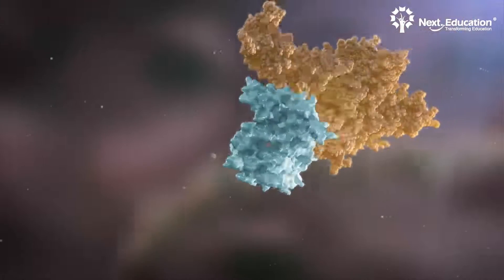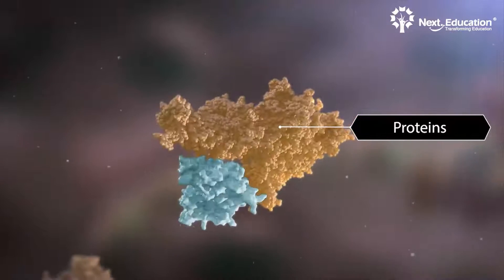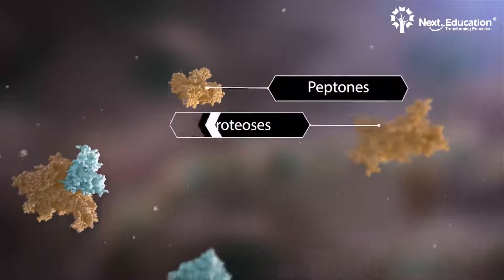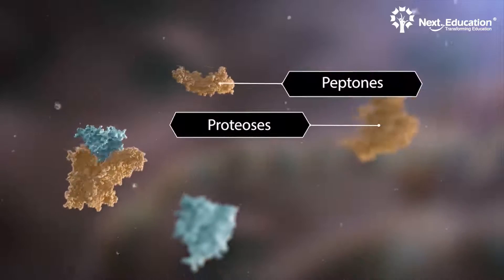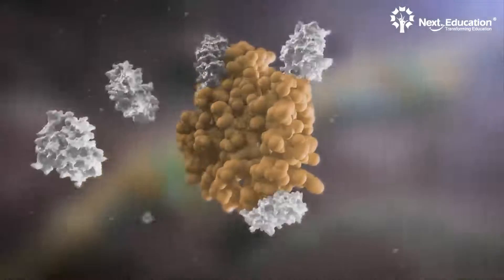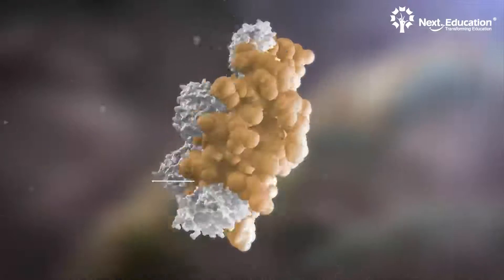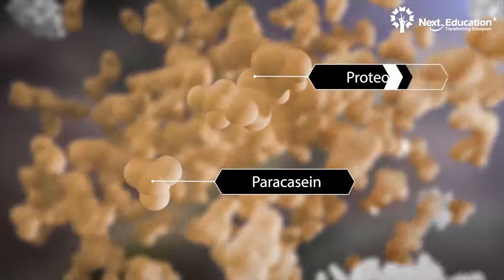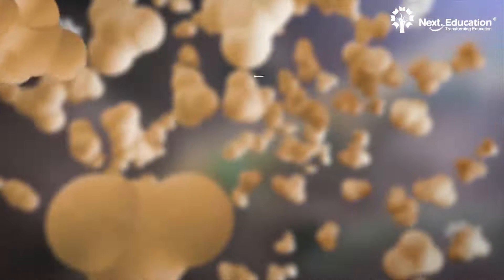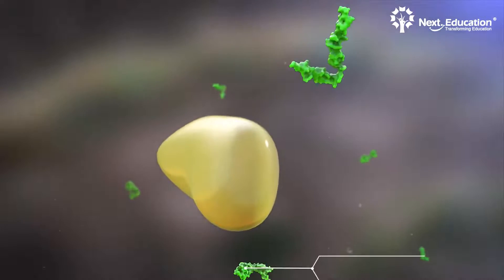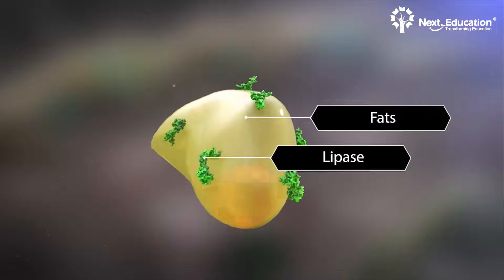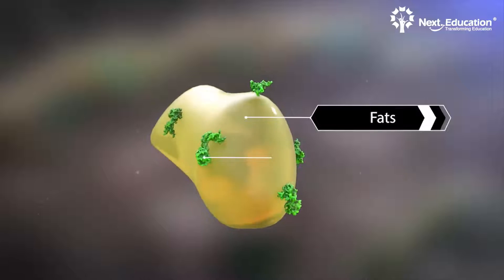Pepsin breaks down proteins into peptones and proteoses, while rennin breaks down milk protein casein into paracasein and proteoses. Likewise, lipase acts on fats and partially digests the food.